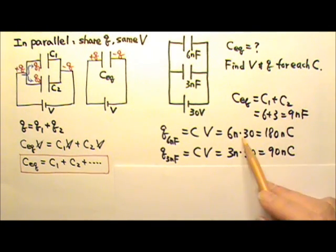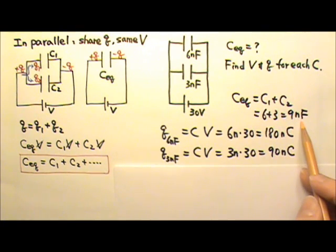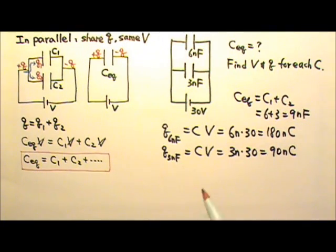As you can see, we found the voltage and the charge without using the equivalent capacitance at all. So the 6nF gets twice the charge.